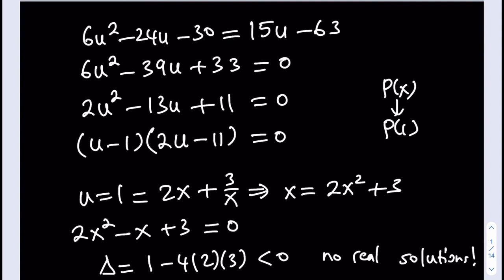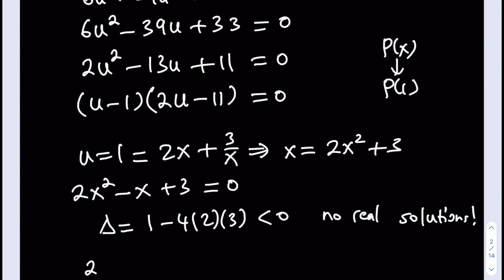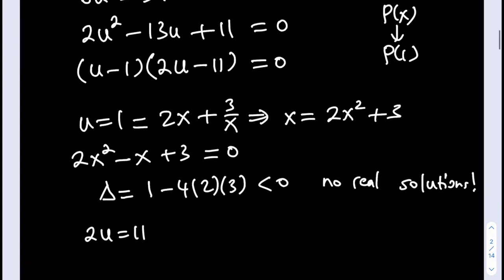But the other equation is going to give you real solutions. So let's go ahead and check that one. 2u is equal to 11. This is going to give you u equals 11 halves. And as you know, u is 2x plus 3 over x. That was our substitution formula.